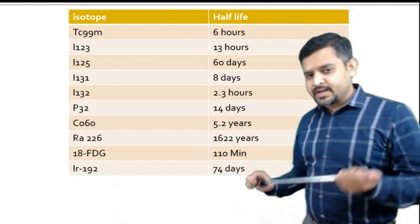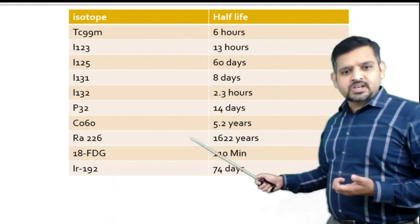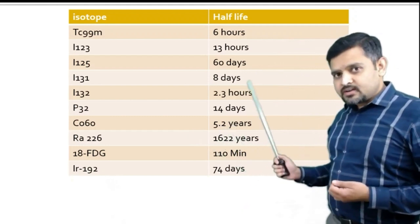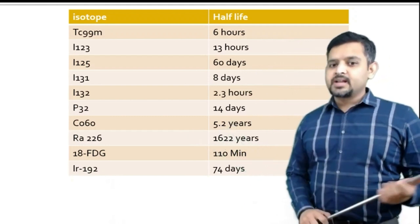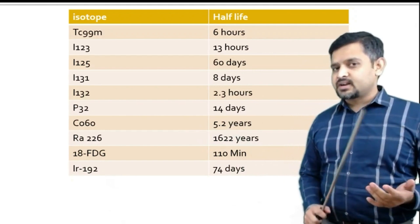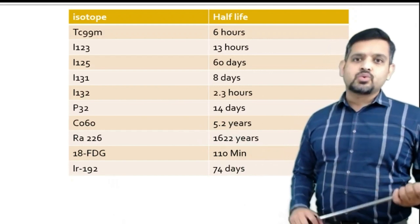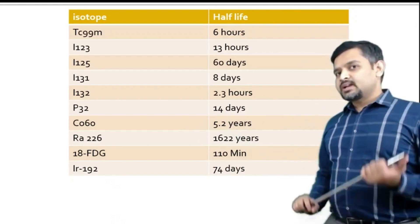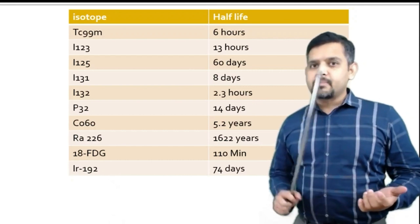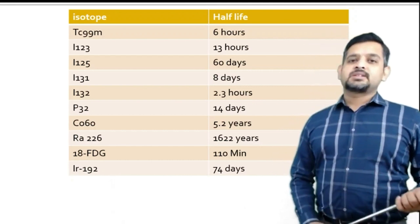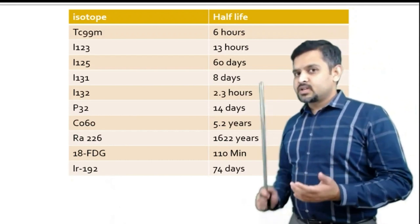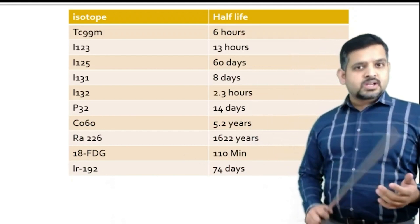Phosphorus-32 has a half-life of 14 days, Cobalt-60 has a half-life of 5.2 years, Radium-226 has a half-life of 1622 years, 18-FDG has a half-life of 110 minutes, and Iridium-192 has a half-life of 74 days.